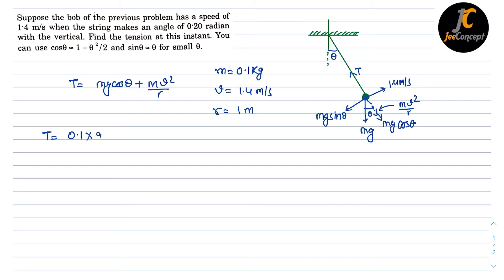I'm taking g as 9.8. The cos theta value can be substituted using 1 minus theta² by 2. Here theta is 0.2 radian, so I'm putting that value 0.2, so 0.2² by 2, plus mv² by r.